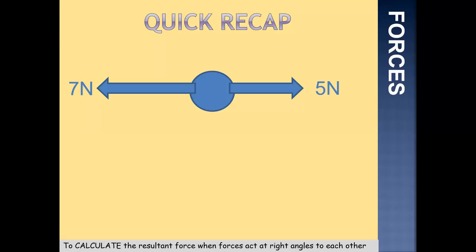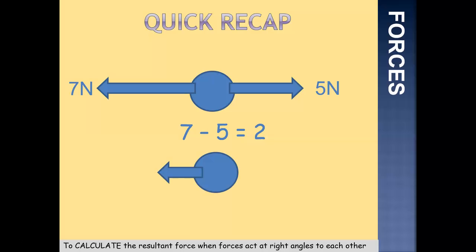We then looked at forces acting in opposite directions. We have an object where two forces are acting upon it: 7 newtons acting to the left and 5 newtons acting to the right. In our previous example they were both going in the same direction so we added them. In this case they're going in opposite directions, so we subtract those forces from each other. 7 take away 5 gives us 2. It's a vector quantity so we have to assign a direction. The larger force is acting to the left, so the resultant force would act to the left as well — 2 newtons to the left.